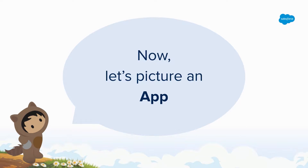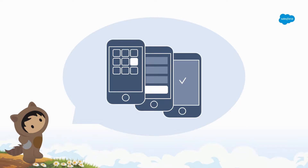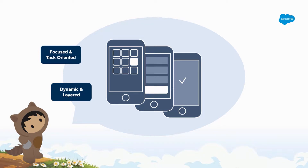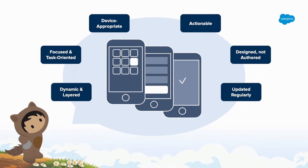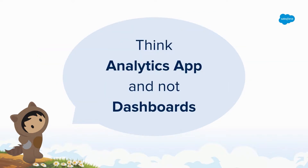Now let's picture an app. What do you think of when I say the word app? You might think of something like this. It's dynamic and layered. Focused and task-oriented — the whole design of the application is to complete a task. Device-appropriate. Actionable. Something that's designed, not authored. Thinking in terms of designing applications versus authoring documents. And as a user of an application, you expect it to be updated regularly. You expect the designers and builders of that application to be listening to your feedback, iterating, and making improvements. So we really encourage all of our customers to think in terms of analytic apps, not just dashboards.